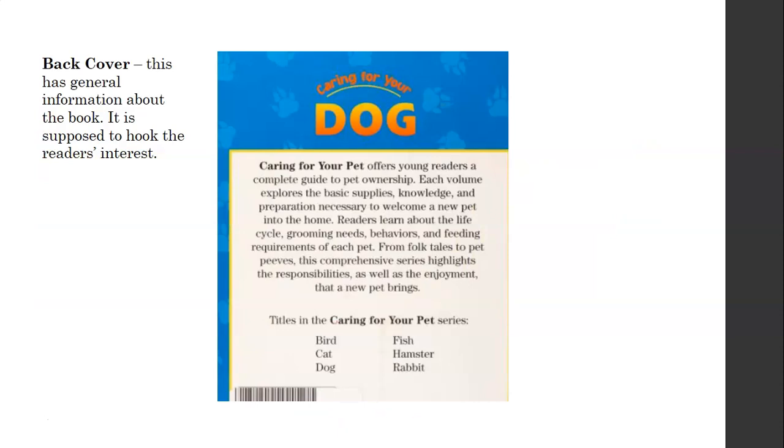Finally, the last part of the book I want to talk about today is the back cover. This has general information about the book. And it's supposed to hook the reader's interest. So, for instance, this says, Caring for your pet offers young readers a complete guide to pet ownership. And each volume explores the basic supplies, knowledge, and preparation necessary to welcome a new pet into the home. Readers learn about the life cycle, grooming needs, behaviors, and feeding requirements of each pet. From folktales to pet peeves, this comprehensive series highlights the responsibilities as well as the enjoyment that a new pet brings. And there's the title right there, Caring for your Dog. So, it's just trying to hook the reader and tell you what the book's about.